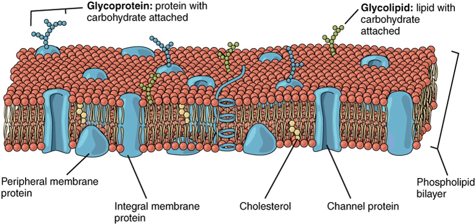Oligosaccharides are sugar-containing polymers. In the membrane, they can be covalently bound to lipids to form glycolipids or covalently bound to proteins to form glycoproteins. The sugar groups of glycolipids are exposed at the cell surface, where they can form hydrogen bonds. Glycolipids provide the most extreme example of asymmetry in the lipid bilayer and perform a vast number of communicative functions, including cell recognition and cell-cell adhesion. Glycoproteins are integral proteins that play an important role in the immune response and protection.